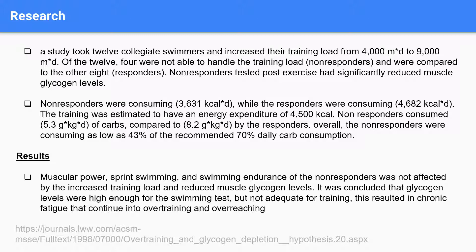One of the research articles we found was on a study that took 12 collegiate swimmers and increased their training load from 4,000 meters a day to 9,000 meters a day. Of the 12, 4 were not able to handle the training load and were labeled non-responders, compared to the other eight who were labeled responders. The non-responders tested post-exercise had significantly reduced muscle glycogen levels, which can be attributed to their diet — the non-responders were consuming 3,631 calories a day while the responders were consuming 4,682 calories a day. The training was estimated to have an energy expenditure of 4,500 calories.